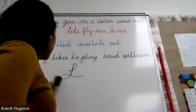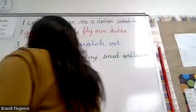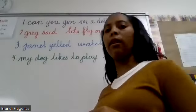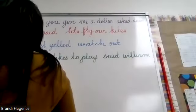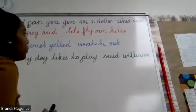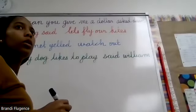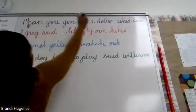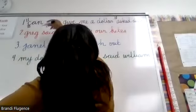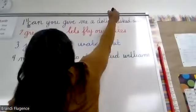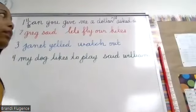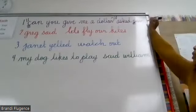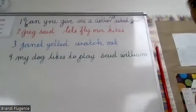Let's go over them. Number one: 'Can you give me a dollar?' asked Dave. How would I write this correctly? Capitalize the C in 'can,' put quotation marks at the front of 'can' and at the end of 'dollar' — that's what he said. The question mark goes at the end inside the quotation marks. Capitalize 'Dave' and finish with a period.